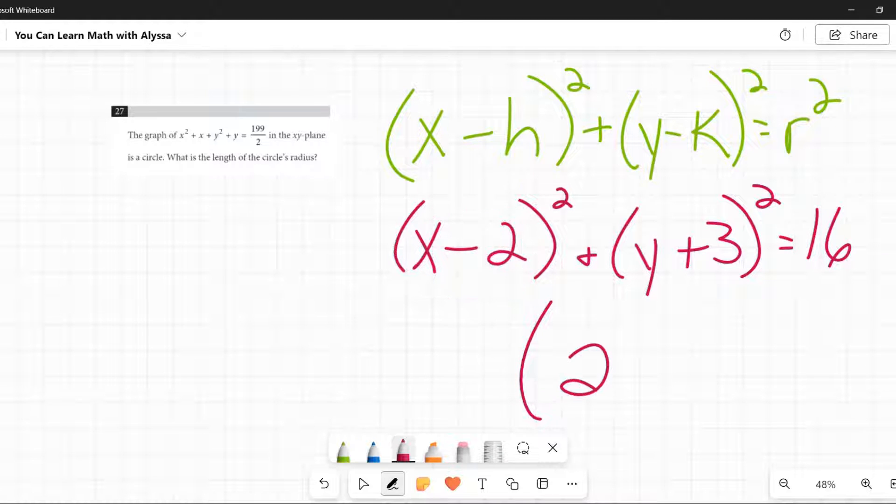So negative 2, take the opposite, positive 2. Positive 3, take the opposite, negative 3. The center is at 2, negative 3. This is r squared. So I take the square root. The radius of this circle is 4.